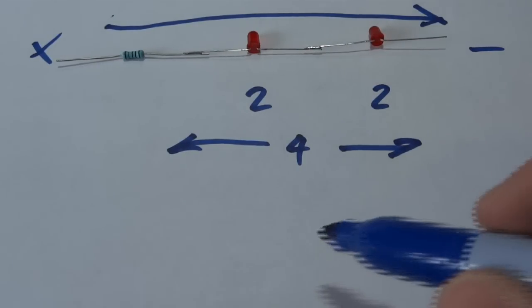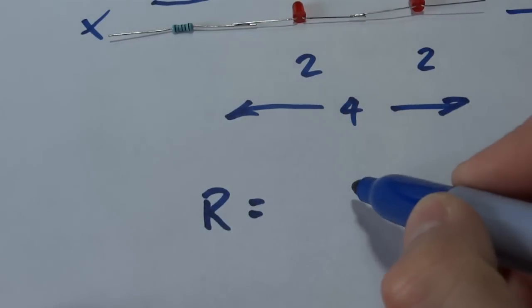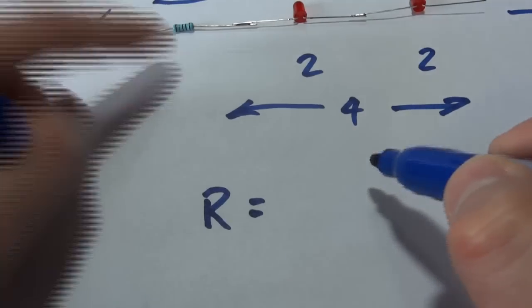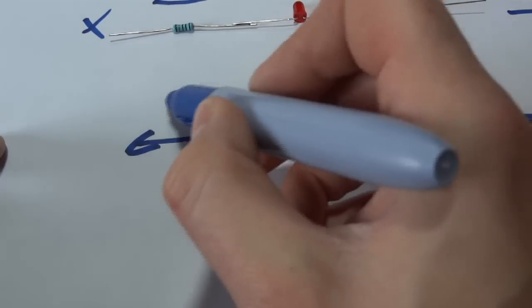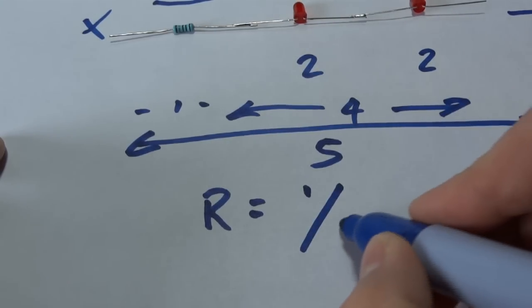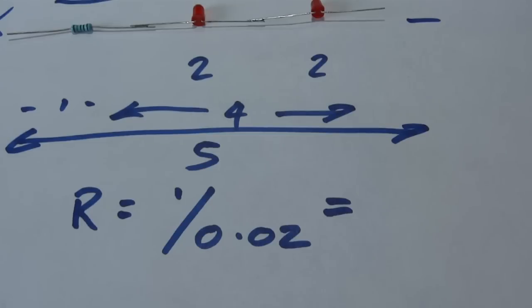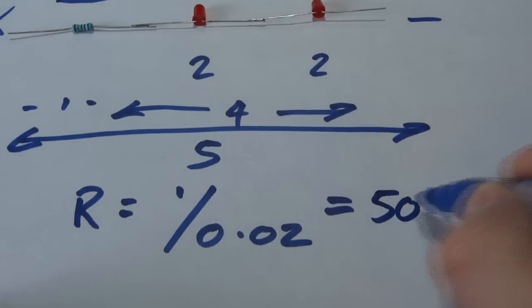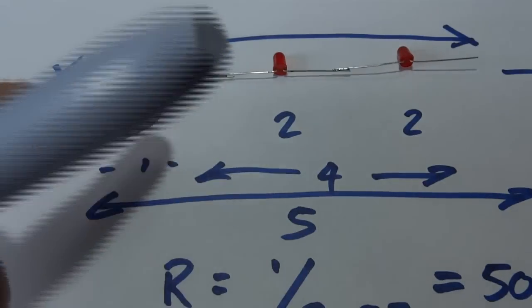So in this case we need to do that the resistance equals a drop of one volt, bearing in mind our battery across everything is going to be five volts, so that leaves us one volt to drop across the resistor. So it's going to be one divided by 0.02. And that value equals 50 ohms. So we need a 50 ohm resistor in place here.